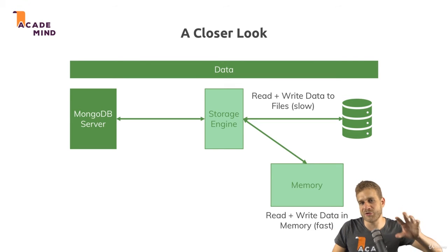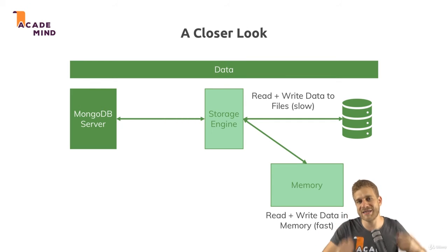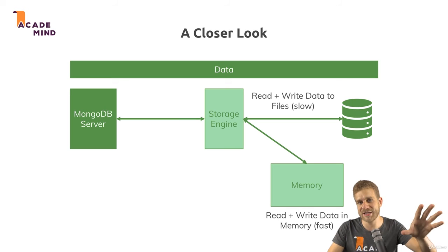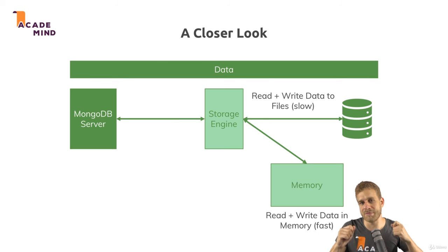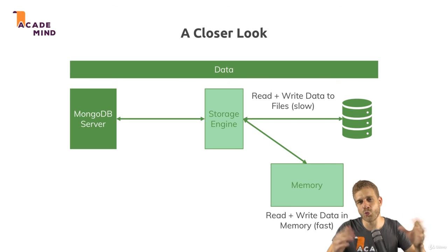I will dive a little deeper into that later in the course. But in general, you need to be aware that you always talk to the MongoDB server. Behind that server, the server talks to the storage engine, which manages your data and stores it in files in the end, but also in memory in between so that you can work with the data in a very fast way. This is how the MongoDB server works behind the scenes.